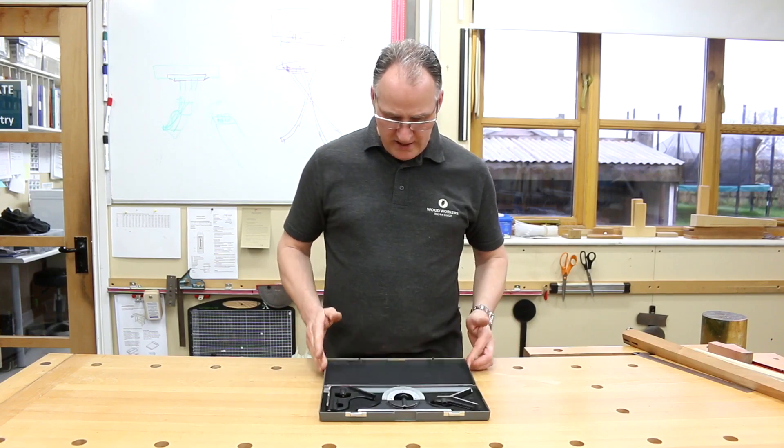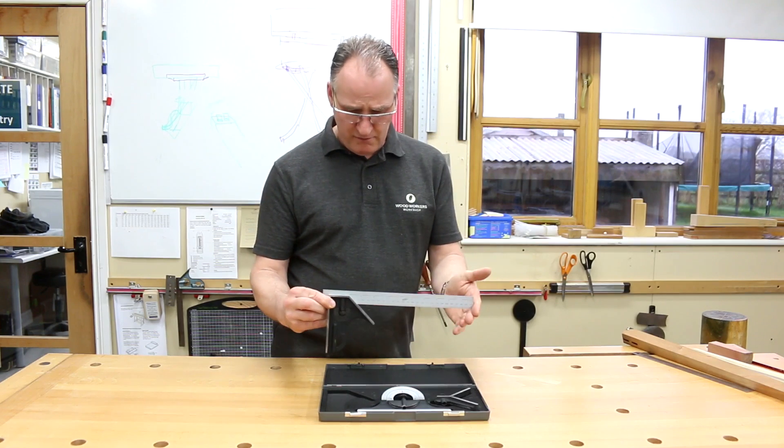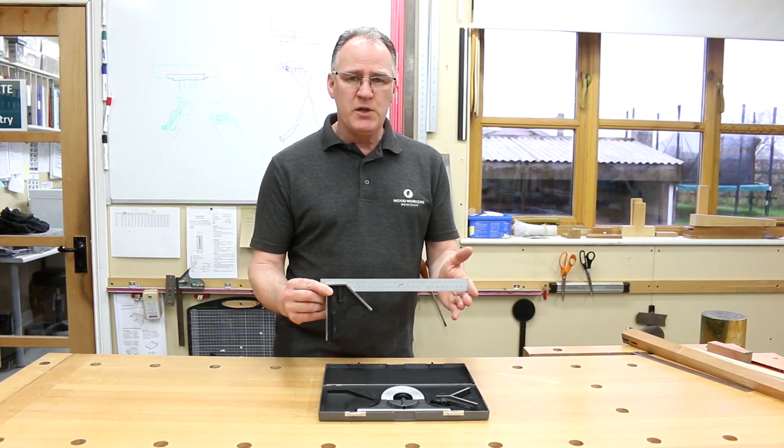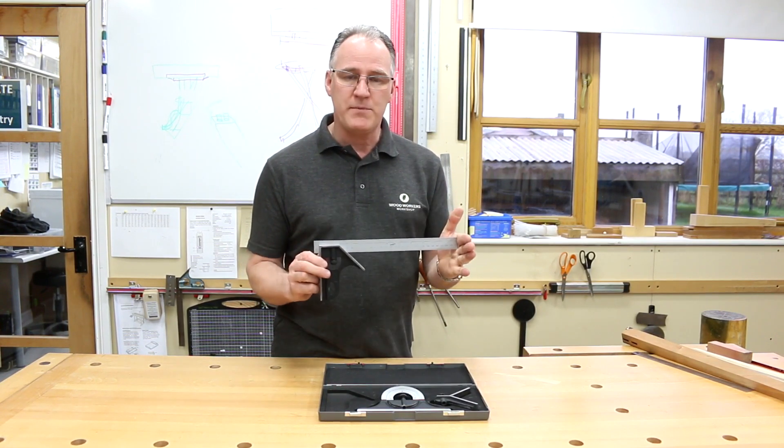The metric and imperial combination square set comes in this plastic box all laid out with some foam to protect it. This is available from Woodworkers Workshop in the UK and Europe. Check out the description and the links below for our website.